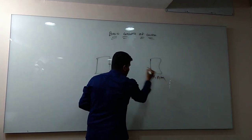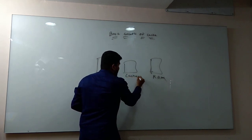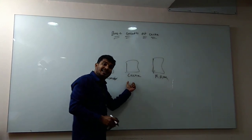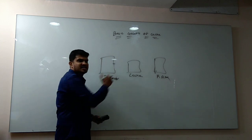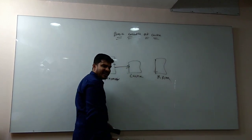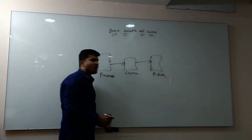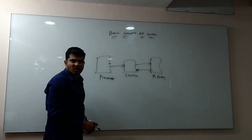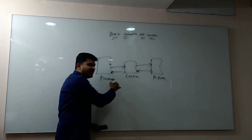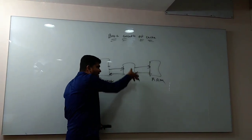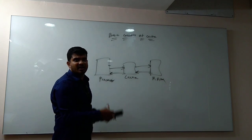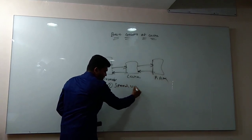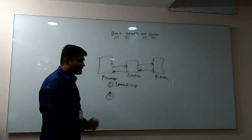To overcome this, we bring in the concept of cache. The cache is not as fast as the processor, but it is not as slow as RAM either. The processor will ask the cache for anything, and the cache will in turn do the job of asking RAM. The RAM will place the data into the cache, and from the cache it is given back to the processor. The cache is also a temporary storage device.